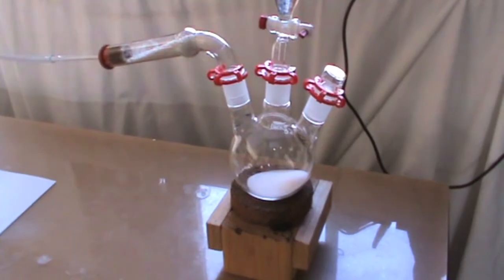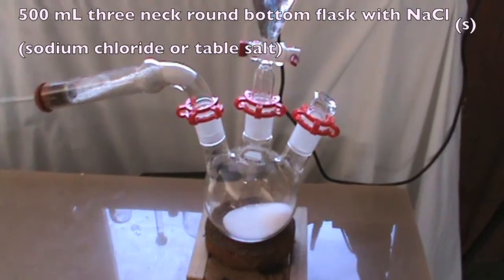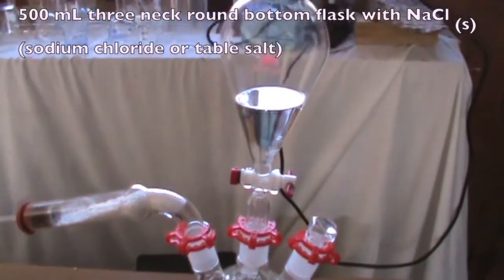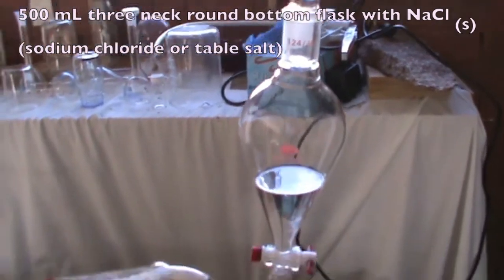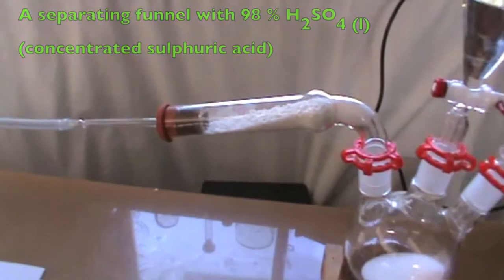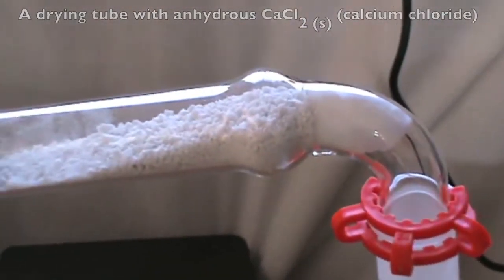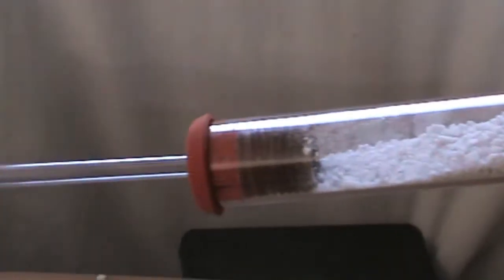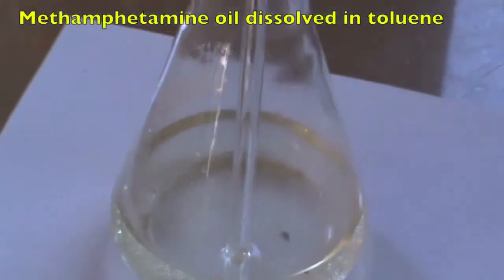Set up a suitable apparatus for the generation of anhydrous hydrochloric acid gas. In my setup, I used a 500 ml three-neck round bottom flask filled in with an excess of sodium chloride crystals. A separating funnel filled in with an excess of 98% sulfuric acid. A drying tube filled in with anhydrous calcium chloride crystals that is connected to a pipe leading down to the flask containing the methamphetamine oil dissolved in toluene.